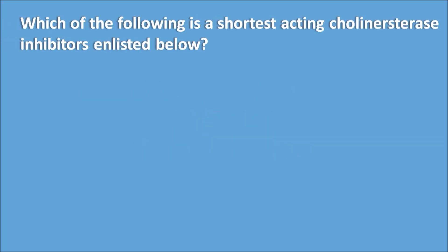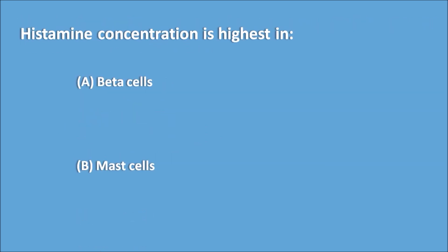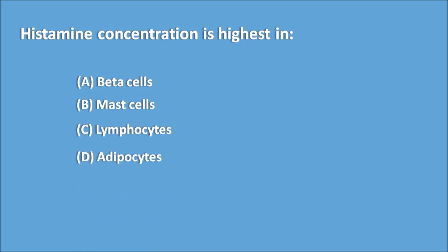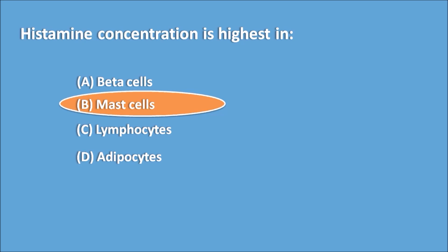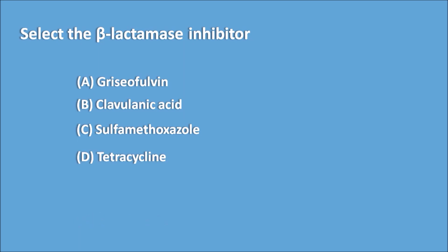Which of the following is the shortest-acting cholinesterase inhibitor? Options: (a) Neostigmine, (b) Pyridostigmine, (c) Edrophonium, (d) Physostigmine. Answer: Edrophonium is the shortest-acting cholinesterase inhibitor. Histamine concentration is highest in: (a) Beta cells, (b) Mast cells, (c) Lymphocytes, (d) Adipocytes — answer is Mast cells. Select the beta-lactamase inhibitor: (a) Griseofulvin, (b) Clavulanic acid, (c) Sulfamethoxazole, (d) Tetracycline — answer is Clavulanic acid.